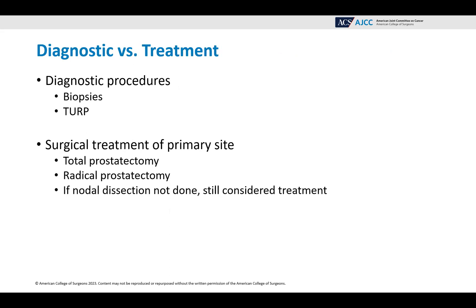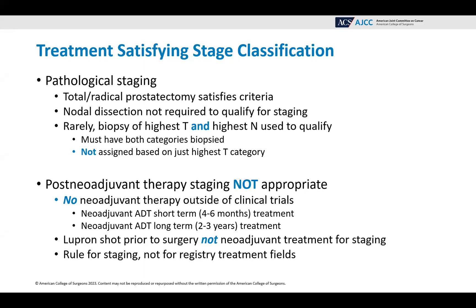Diagnostic procedures include biopsies and TURP. Treatment includes surgical treatment of the primary site — only total prostatectomy or radical prostatectomy. If a nodal dissection is not done, these surgeries are still considered treatment. For pathological staging, a total or radical prostatectomy satisfies the criteria; nodal dissection is not required to qualify for staging. Rarely, a biopsy of the highest T and highest N can be used to qualify for pathological staging — you must have both categories biopsied, and it is not assigned based on just the highest T category.